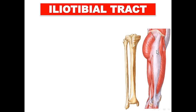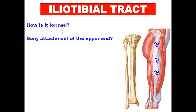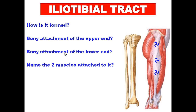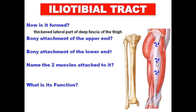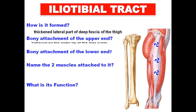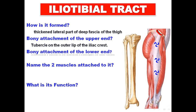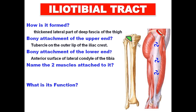The iliotibial tract is a thickening of the deep fascia on the lateral side of the thigh — specifically the lateral part of the deep fascia of the thigh. It has an upper bony attachment at the iliac crest and a lower bony attachment at the front of the lateral condyle of the tibia. Two muscles attach to the upper part of the iliotibial tract: the anterior one is tensor fascia lata, and the posterior one is the gluteus maximus.